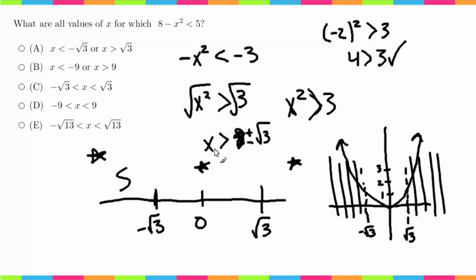Now let's check in this range. Let's check 0. 0 squared is greater than 3. 0 is greater than 3. That is not true. So this is not a solution. Now let's check over here. Let's pick out 2. 2 squared is greater than 3. 4 is greater than 3. This is also true. This is also true. So this here is also a solution.